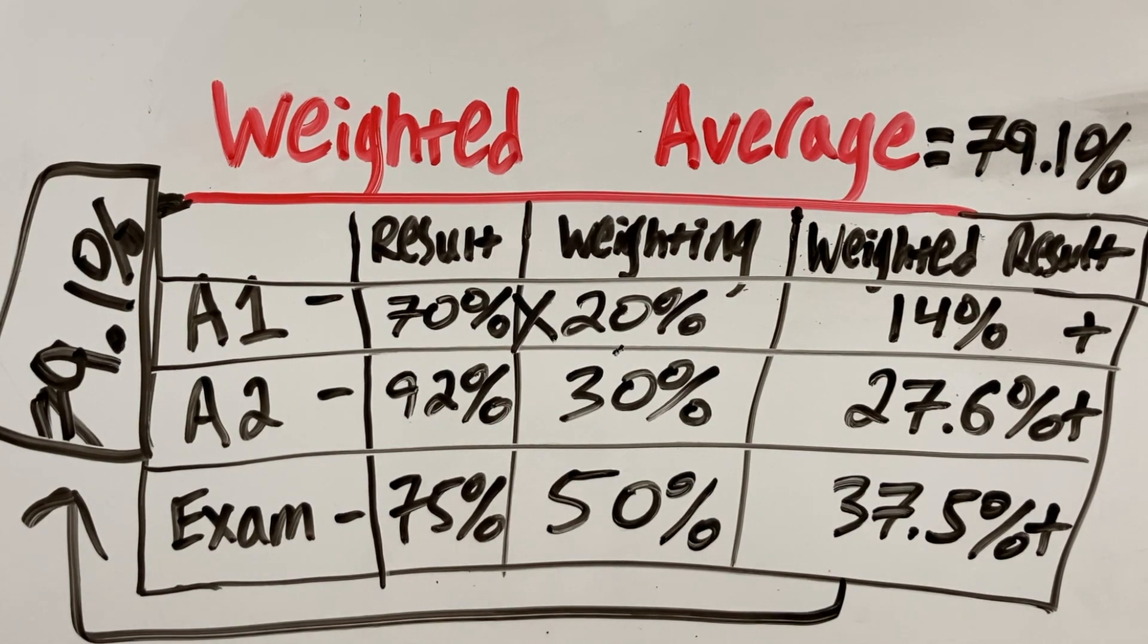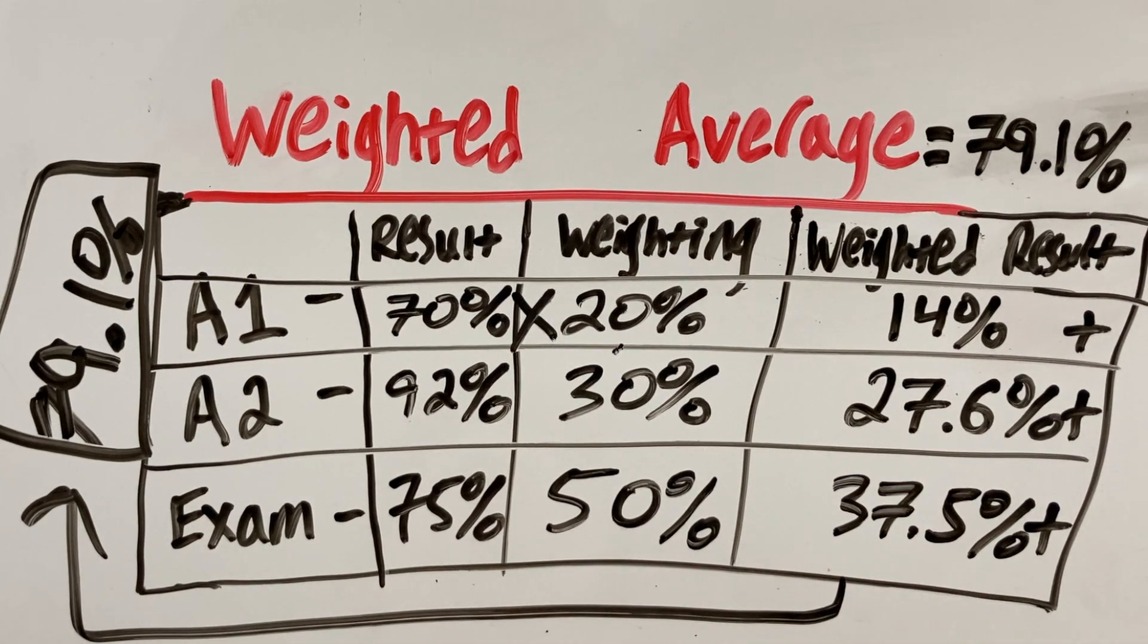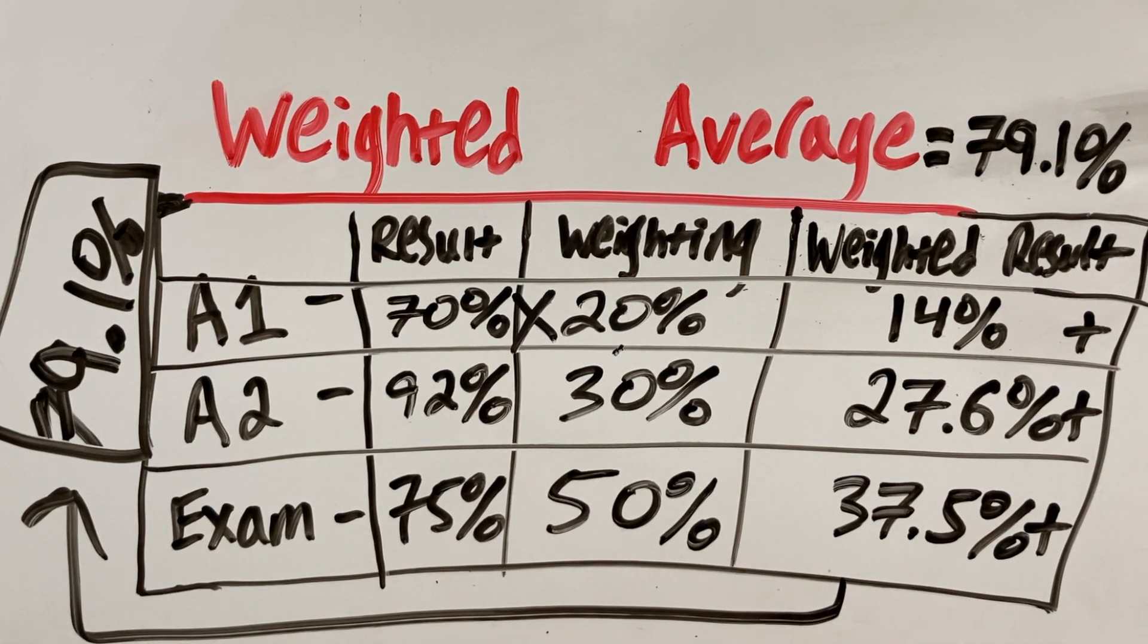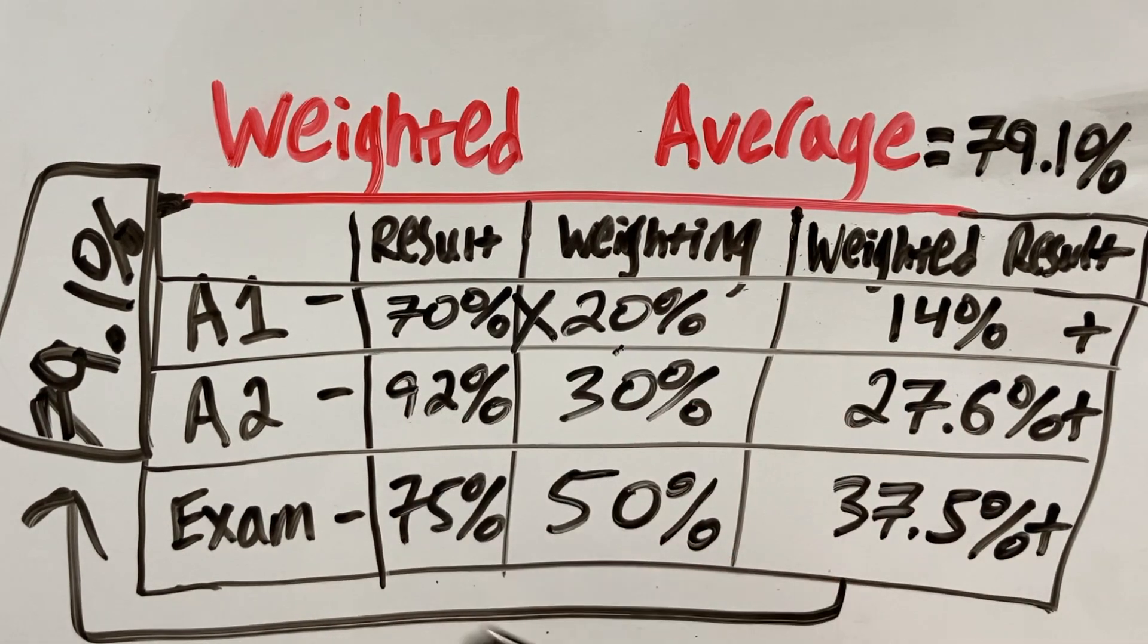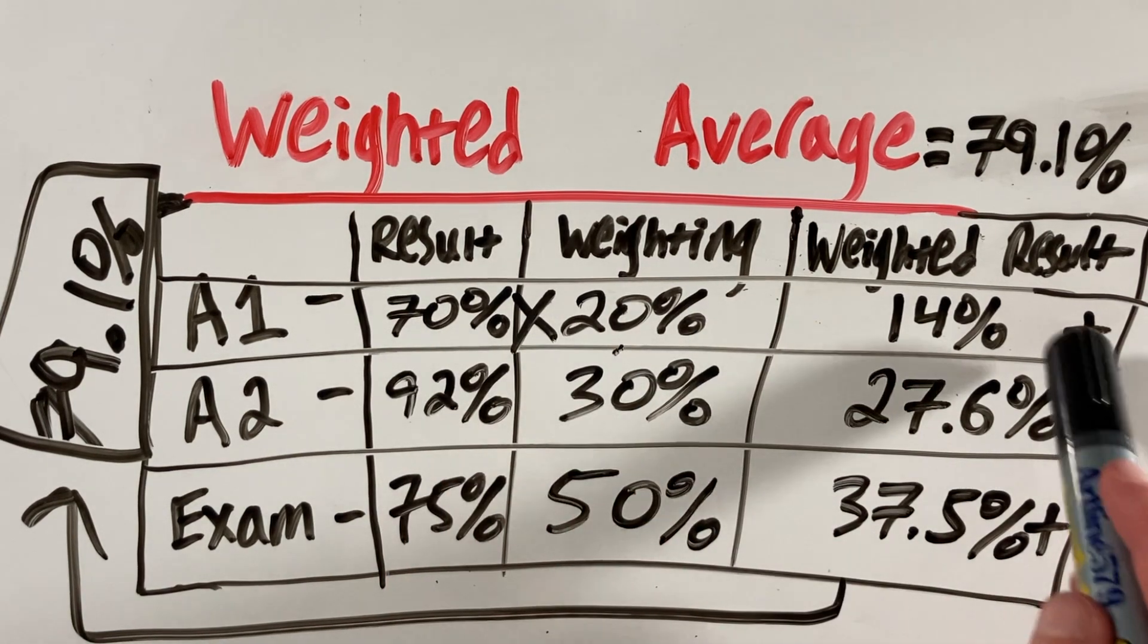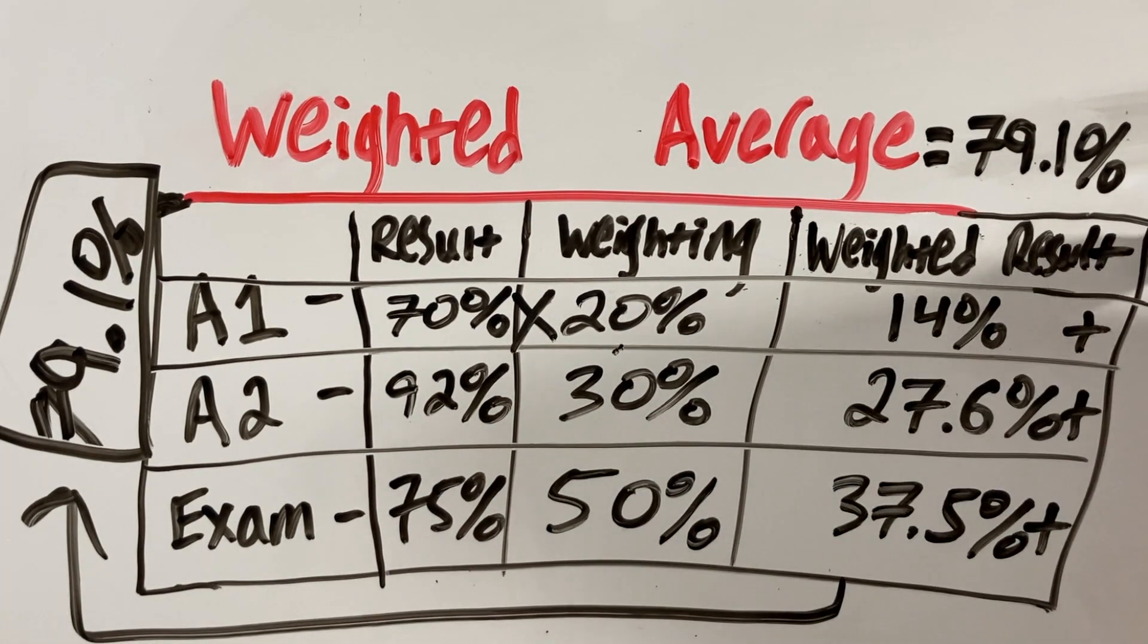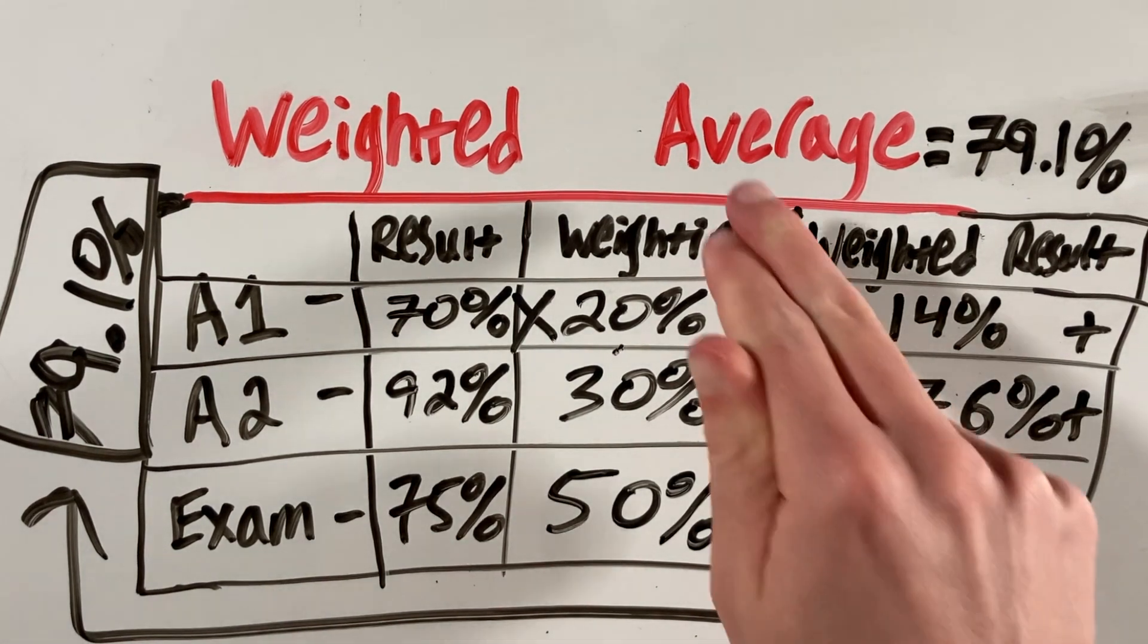This can be applied to many different situations, but I hope this example helped you understand how to calculate the weighted average. A quick summary: you have your results and their different weightings. You multiply each item by its weighting to get the weighted result, and then you sum all your weighted results to get your total weighted average.